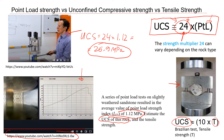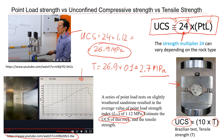Now let's estimate the tensile strength. It is one tenth of the UCS, so if UCS is 26.9 MPa, we multiply by 0.1 — that's 10%. Rounding slightly, the tensile strength is approximately 2.7 MPa. These are quick and easy ways to estimate the strength of rocks. Thanks for watching and have a nice day!